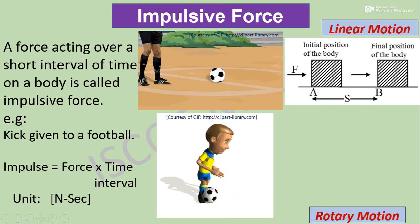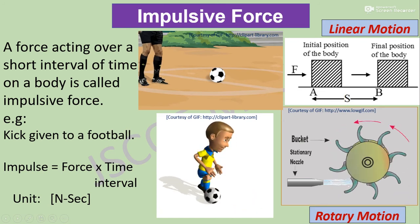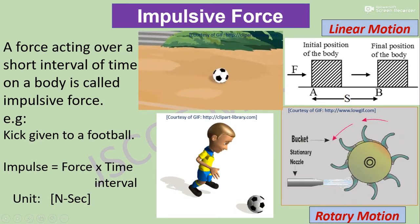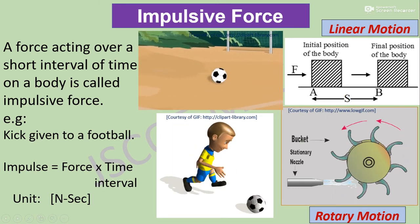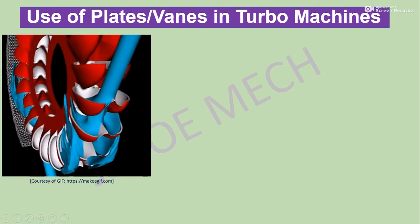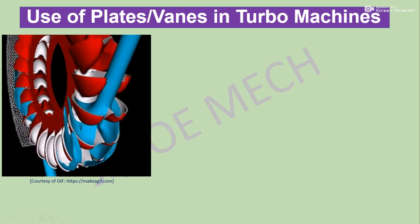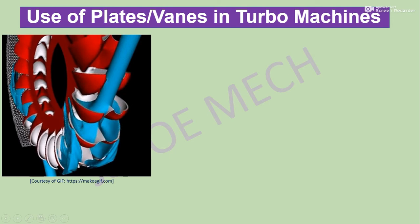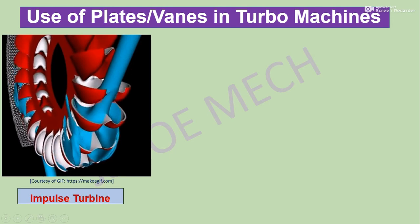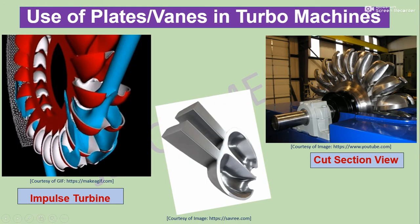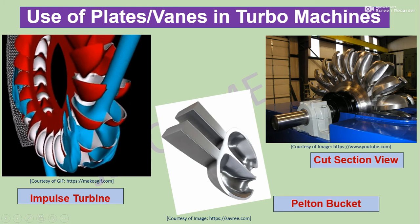Also in the case of rotary motion, here is the impact of jet on a curved plate, as in the case of a belt on a wheel. Use of plates or vanes in turbo machines — here we find the example of a belt on a wheel. We observe that this bucket is subjected to the impact of a jet, that is, an impulse turbine. This is a cut-section view and this is a one-blade view of the belt on bucket.